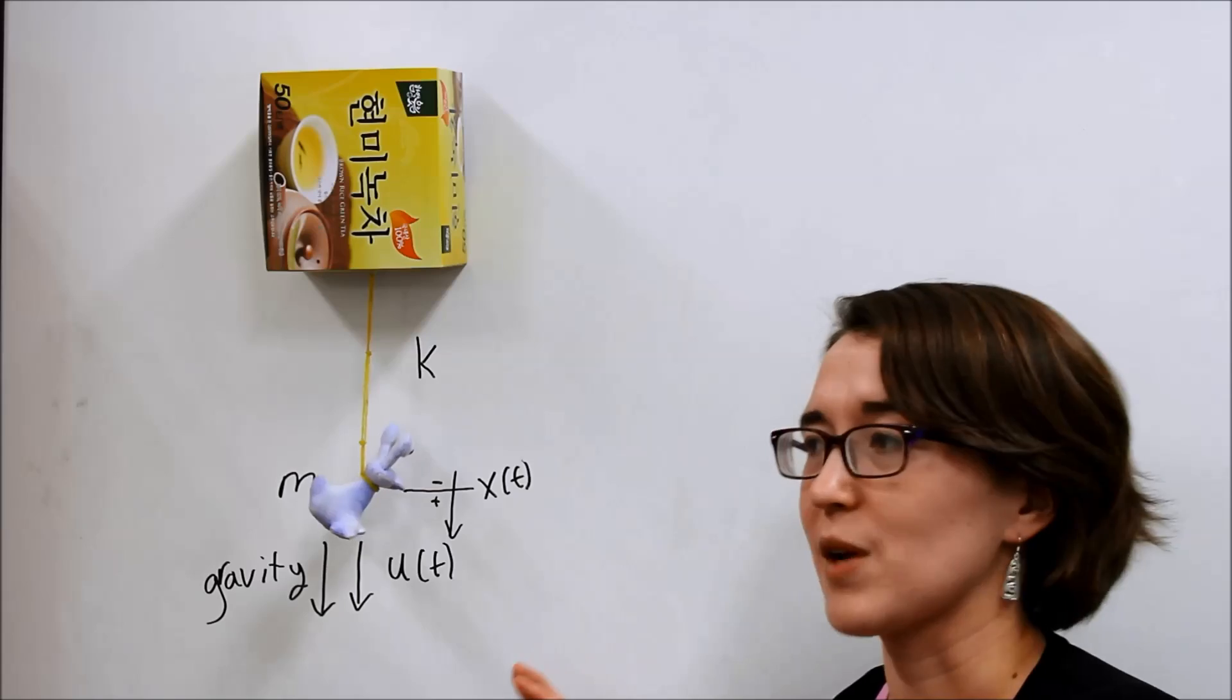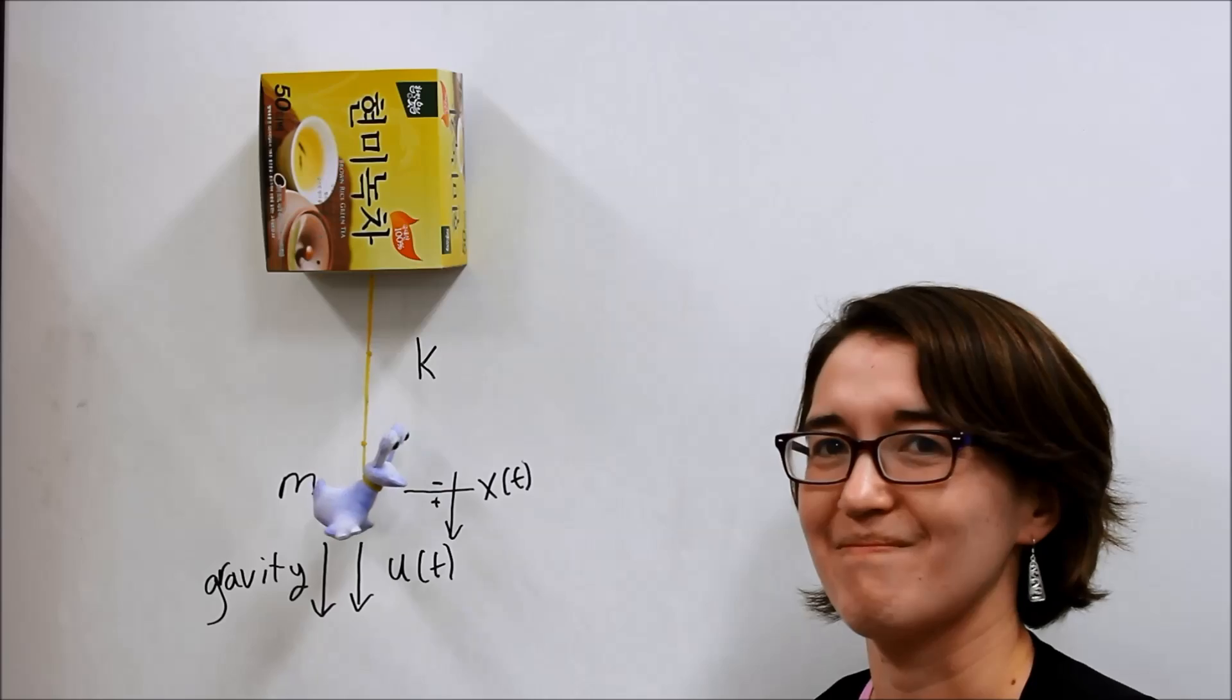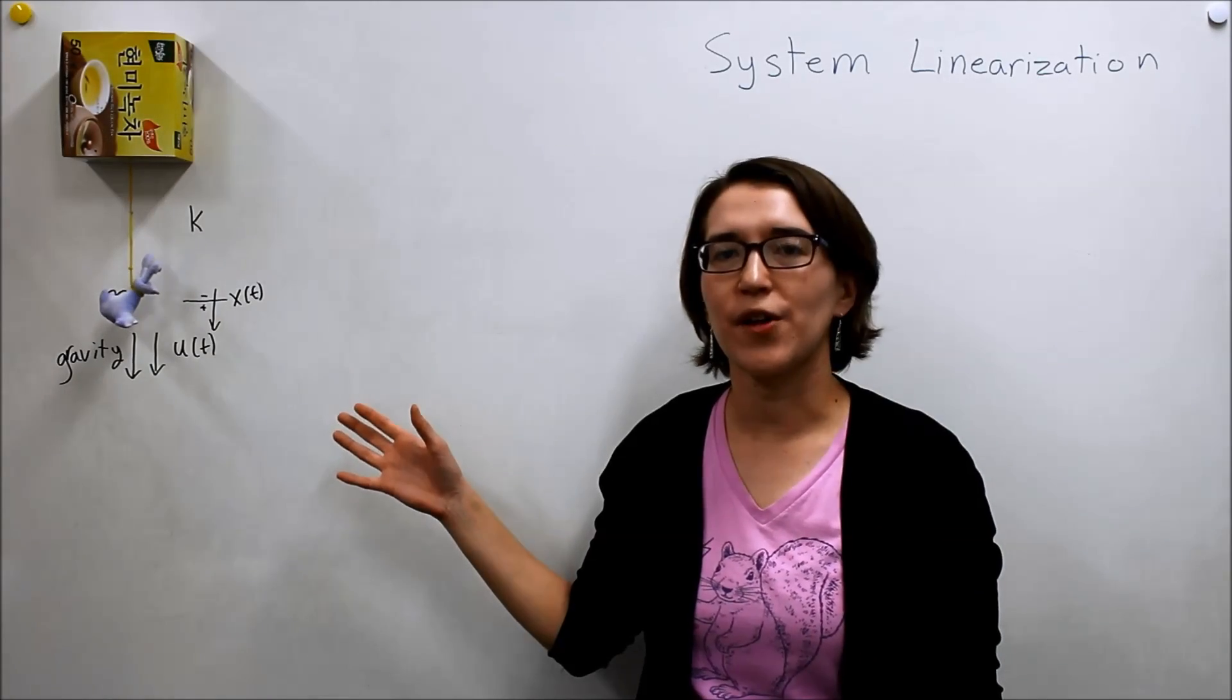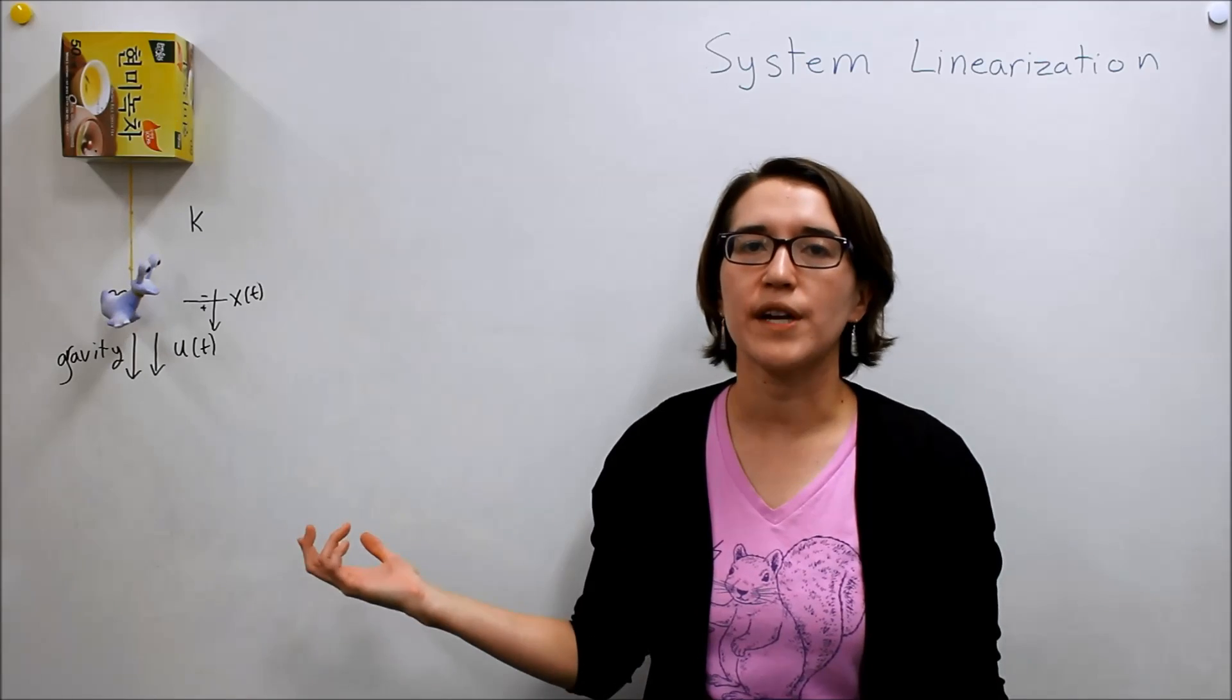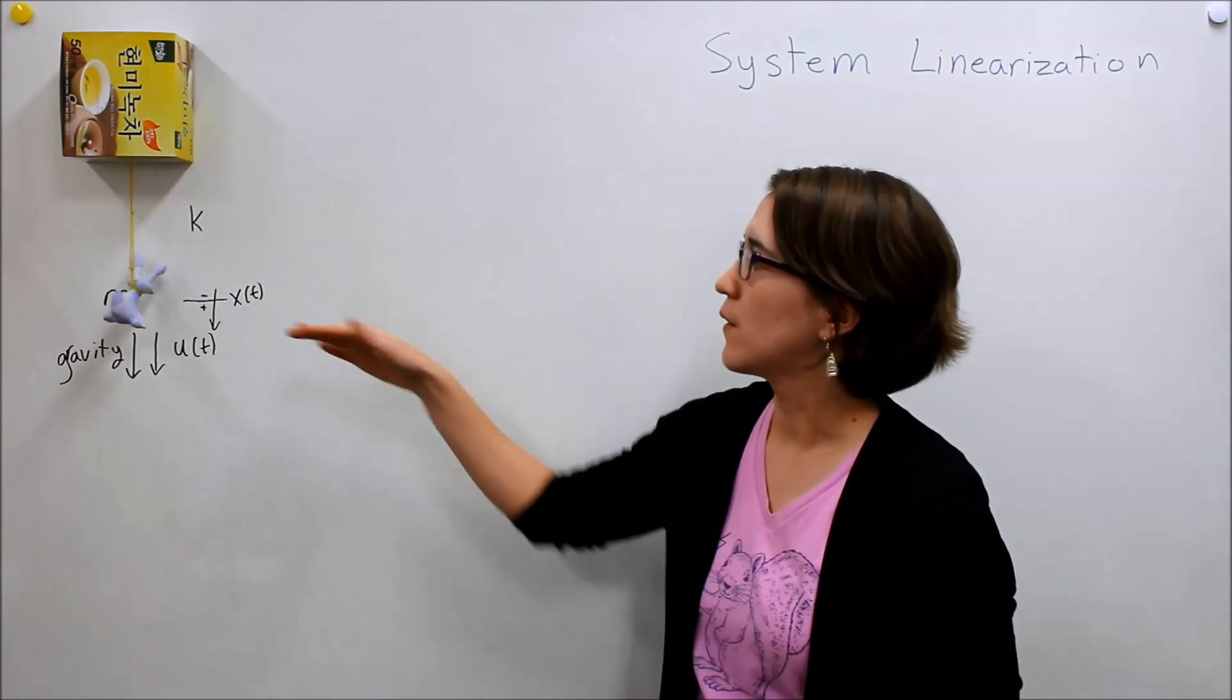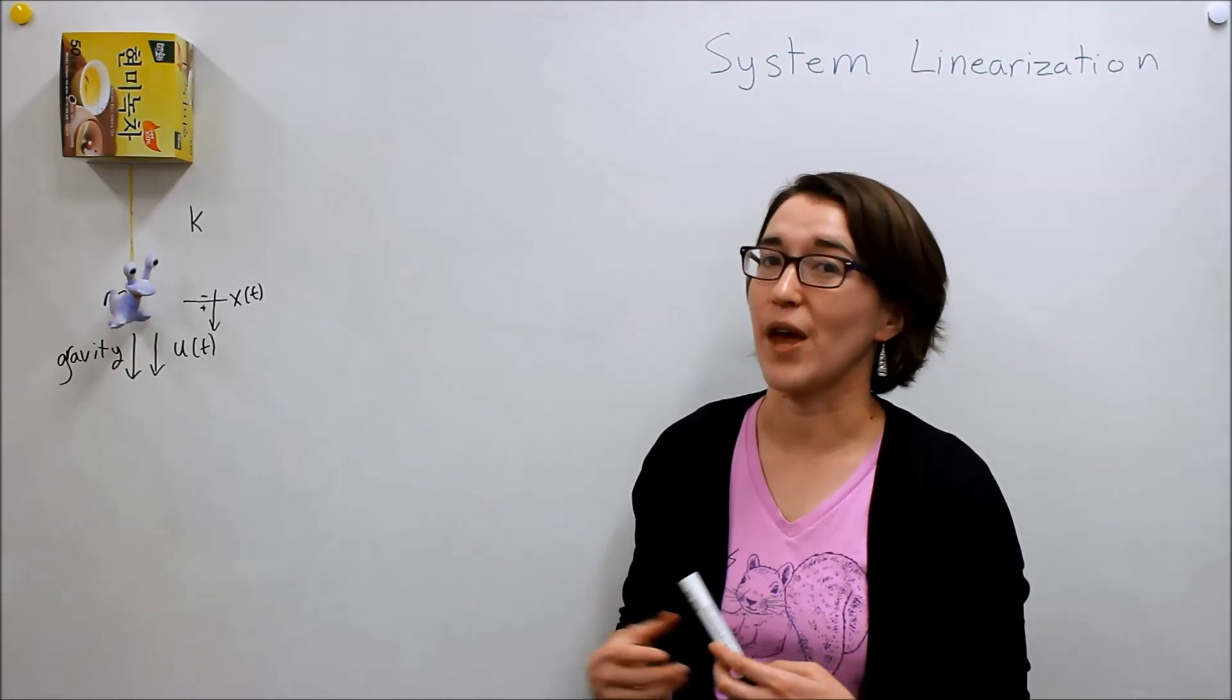So, here is our basic system model. And now we're going to bring it back to the rest of the board, and model this system, and then linearize it. So, we've defined all the variables that we need to on our system model. And now we need to look at the dynamics. So, for a mass system like this, we go to the basic equation of F equals ma.